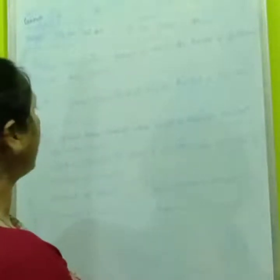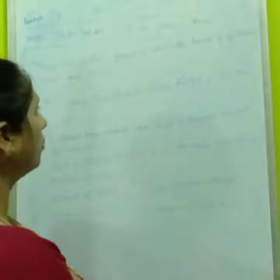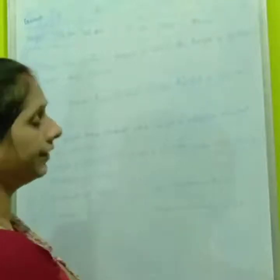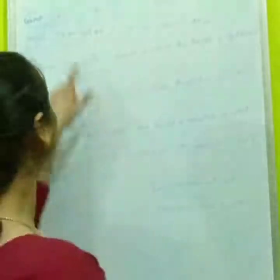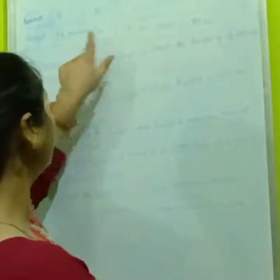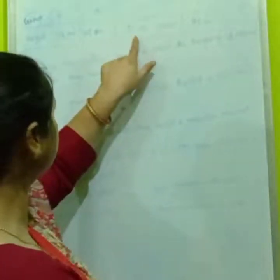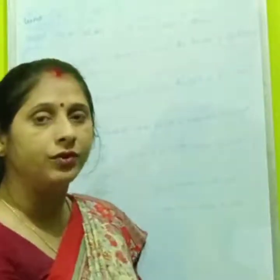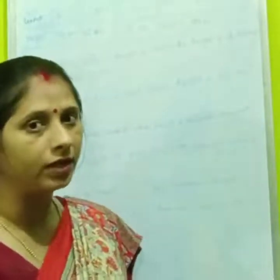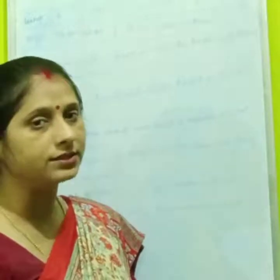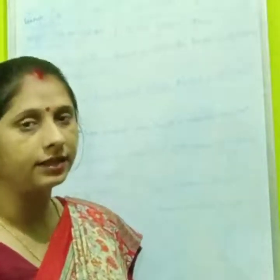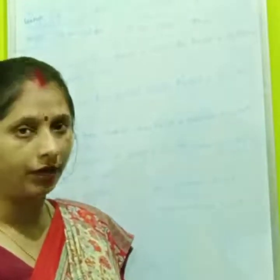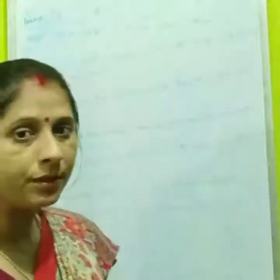Now in question B, how many groups have students whose height is less than 100 centimeter? Now less than 100 centimeter: 98 is less than 100, 96 is less than 100, and 99 is less than 100. So we have 3 groups where the height of students is less than 100. So we will fill 3 in question number B.